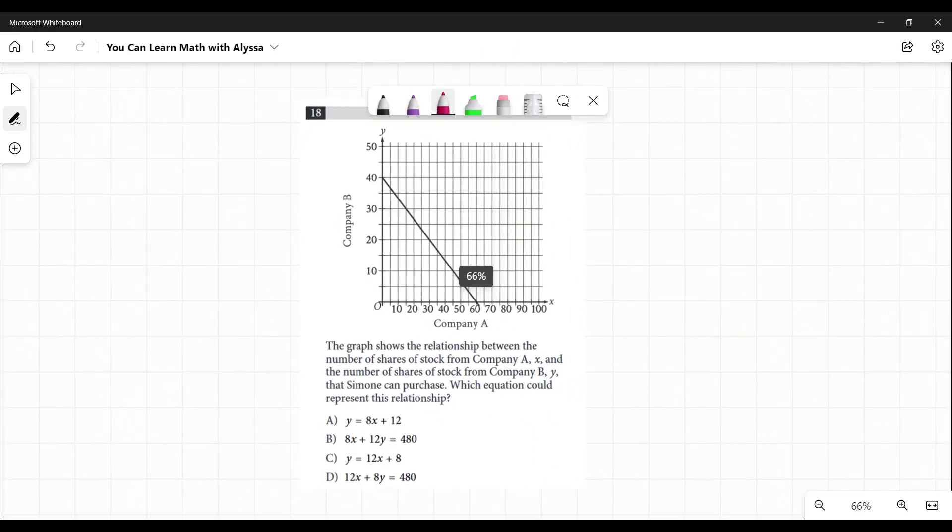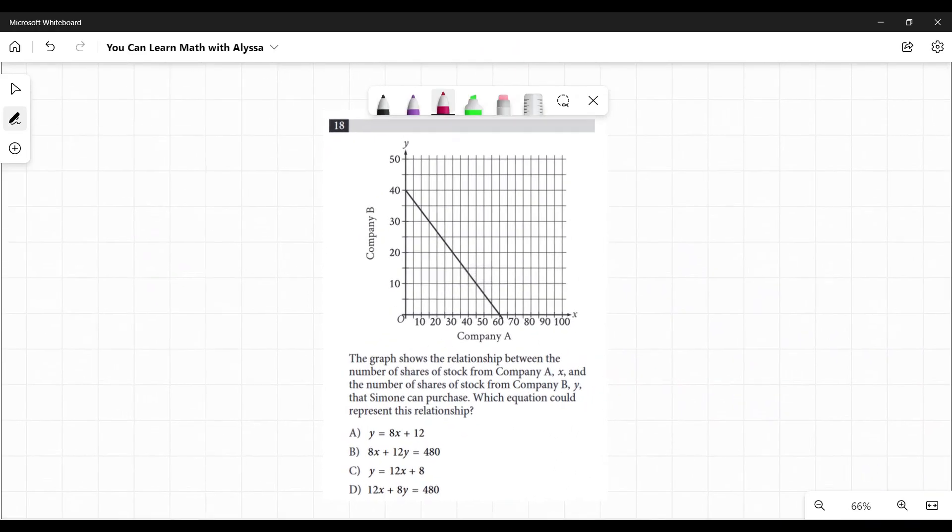We have a graph here. The graph shows the relationship between the number of shares of stock from Company A—that's on the x-axis—and the number of shares of stock from Company B on the y-axis that Simone can purchase. Which equation could represent this relationship?